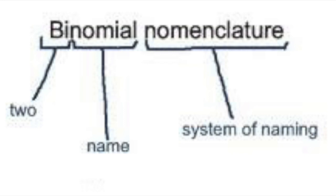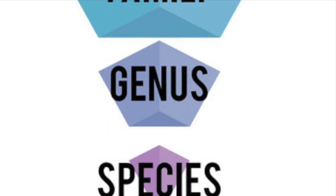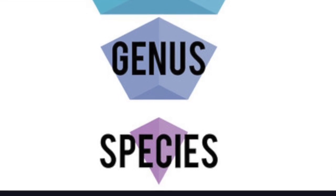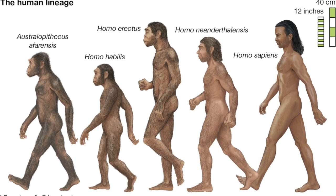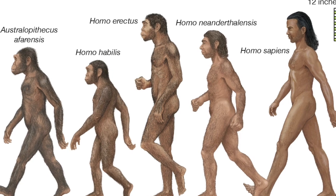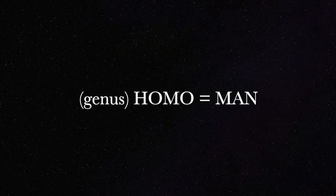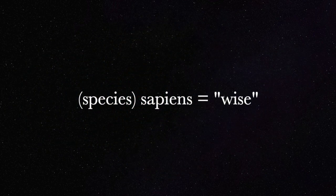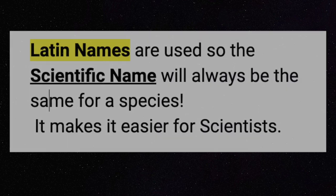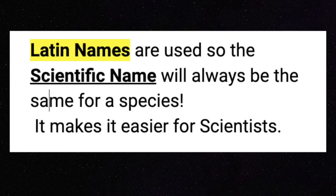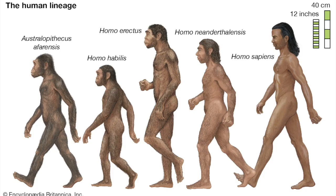Binomial nomenclature uses the last two levels — genus and species — to come up with a scientific name. For example, the scientific name for human beings is Homo sapiens. Homo is the genus, which is Latin for man, and sapiens is the species, Latin for wise. So if you translate the Latin scientific name of humans, it means the wise man.